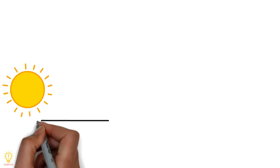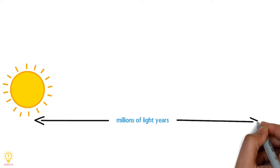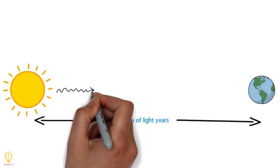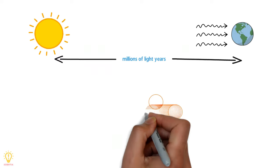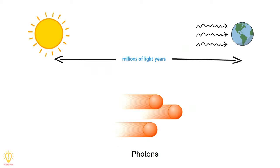Consider light emitted from a star millions of light years away. As this light travels through the vacuum of space and reaches us, it gets dim. Light is made up of tiny fundamental bits called photons.